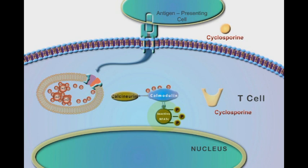Active calcineurin dephosphorylates the inactive nuclear factor of activated T-cells, which is abbreviated as NFAT. This dephosphorylation process activates NFAT.